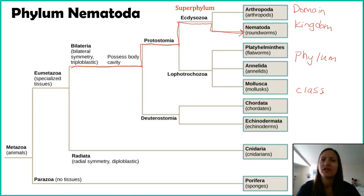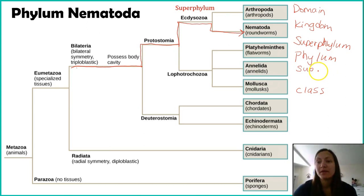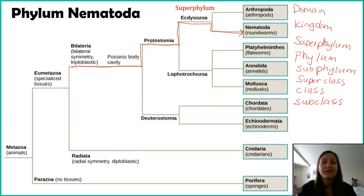We have two prefixes you'll see with these organizations. A superphylum is found above the phylum level, and then we have the prefix 'sub,' meaning below, giving us subphylum. With classes, it's the same thing — there's superclass and subclass. Not every organism has a superphylum, a subphylum, a superclass, and a subclass. It appears somewhat distributed throughout the animal, plant, and bacteria kingdoms.